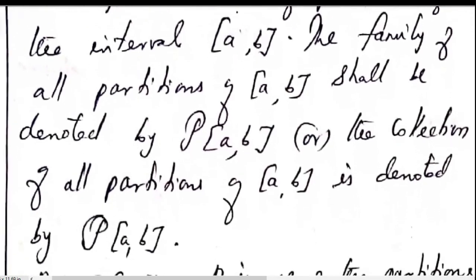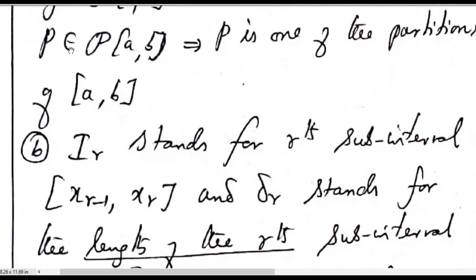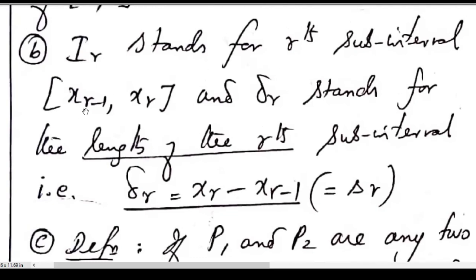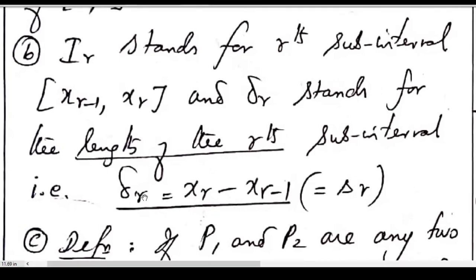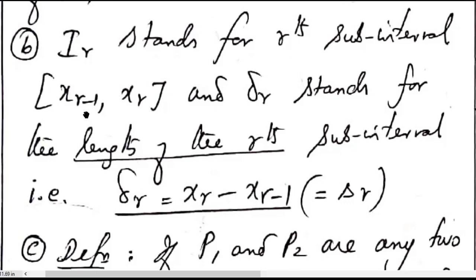The collection of all partitions of [a, b] is denoted by script P([a, b]). If P belongs to script P([a, b]), then P is one of the partitions of [a, b]. Capital I_r stands for the r-th subinterval [x_{r-1}, x_r], and δ_r stands for the length of the r-th subinterval, that is δ_r = x_r − x_{r-1}.